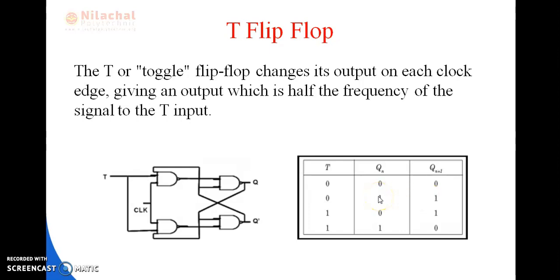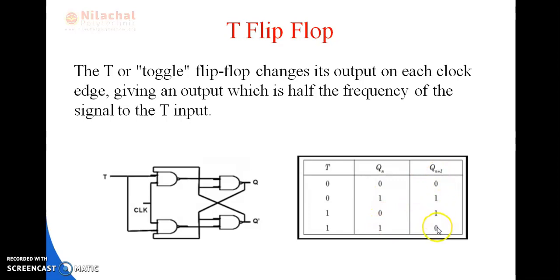Looking at the truth table of T flip-flop: when T value is equal to 0, the output remains the same — no change. When T value is equal to 1, it acts as a toggle switch — that is, the output changes its state. For example, when T is 1 and Qn is 0, then Qn+1 is 1; the output is toggled and not predetermined.